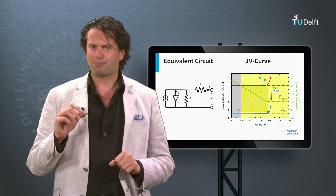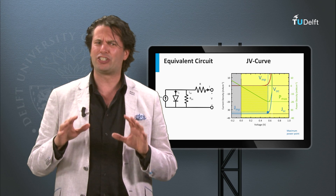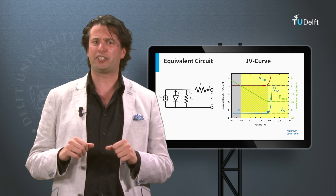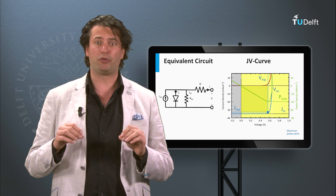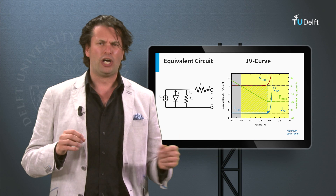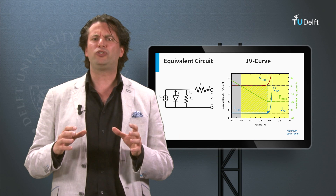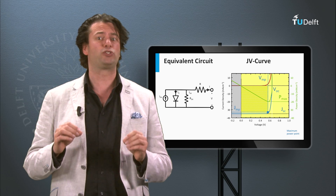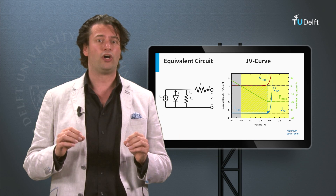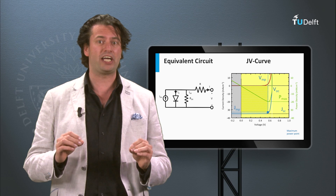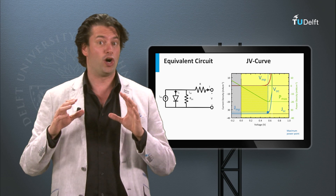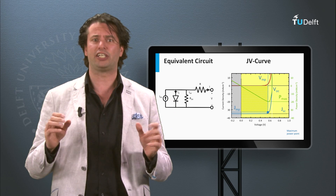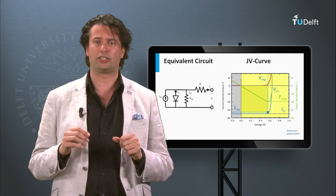In this block I will present a simple electrical circuit and corresponding current-voltage curves which are able to describe the behavior and the performance of solar cells under illumination and under voltage bias, as we have discussed in detail last week.